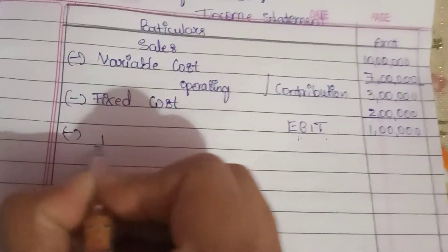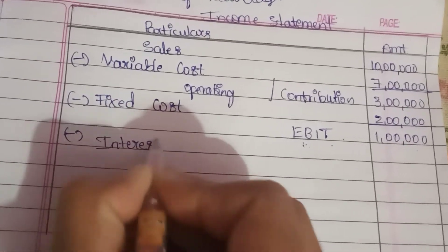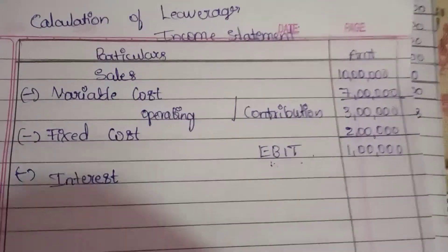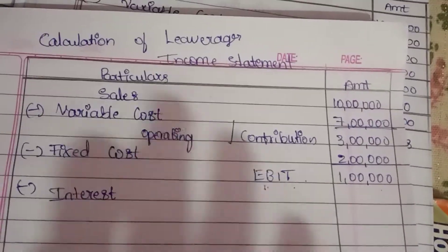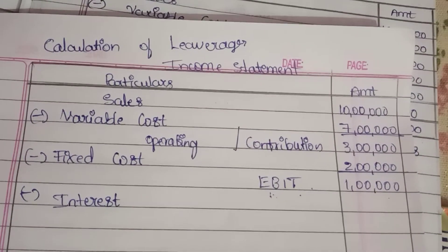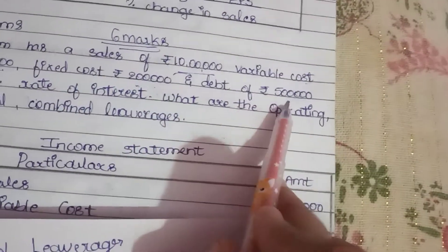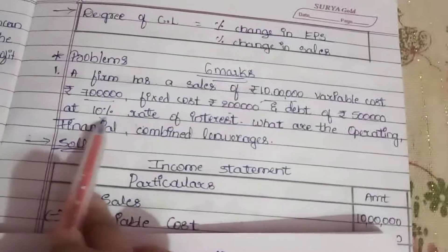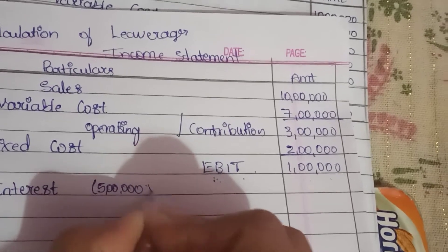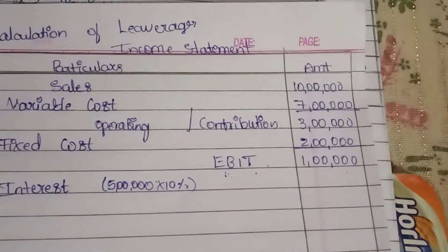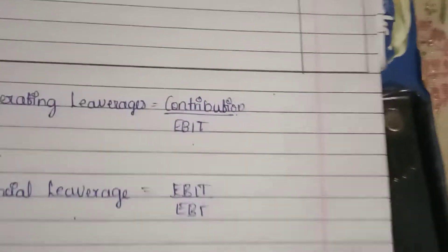Less interest: interest on debenture — debenture means loan. Calculate interest: 5 lakhs at 10%, so interest is 50,000. EBT equals EBIT less interest: 1 lakh minus 50,000 equals 50,000.